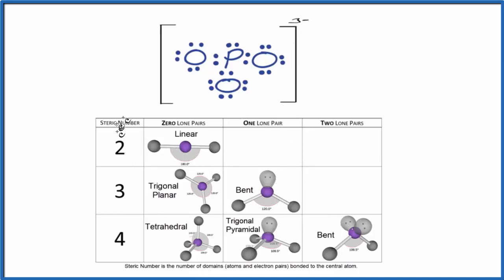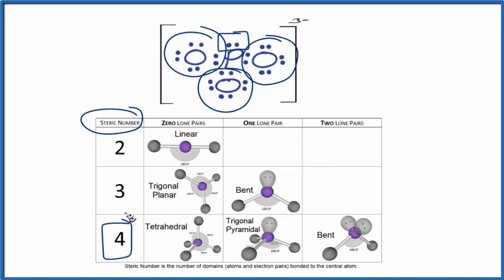So we can count up what's called the steric number. These are the number of electron domains around the atom. So we call this one, two, three, and then the lone pair, that also counts. So we have one, two, three, four is our steric number.